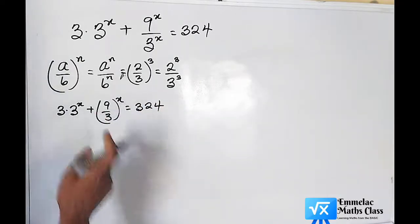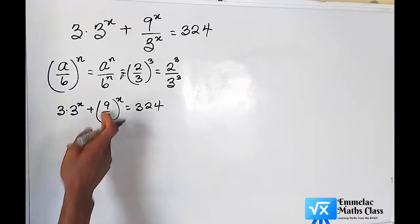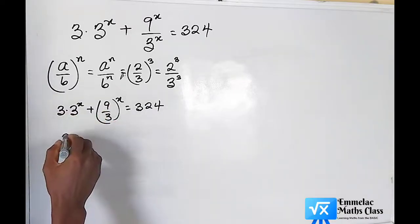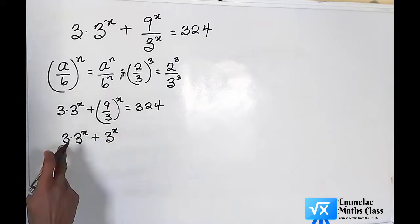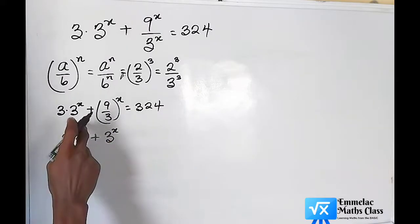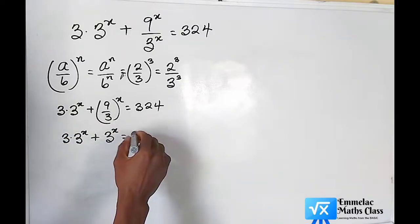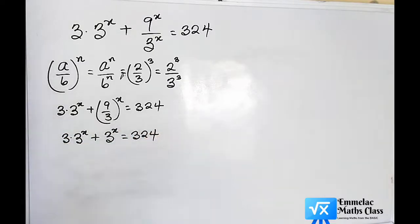And when we reduce this, that would be equals to 3 because 9 divided by 3 is 3. We have 3 times 3 raised to the power of x plus 3 raised to the power of x, which equals 324.